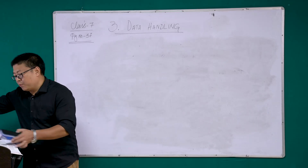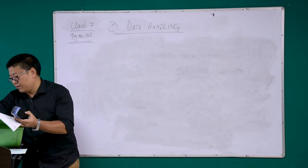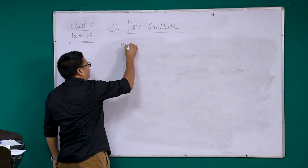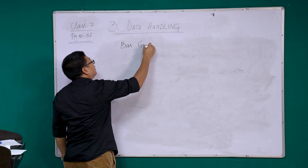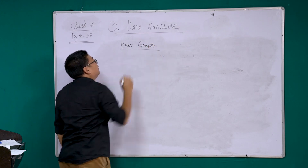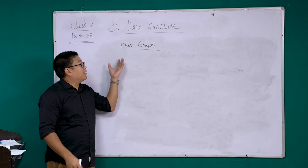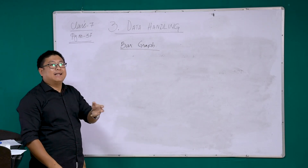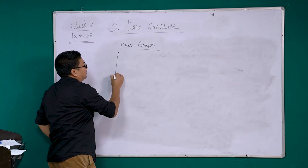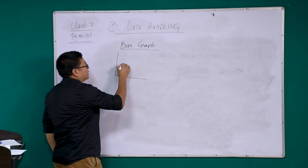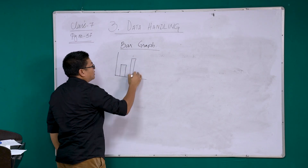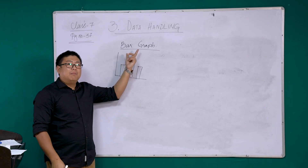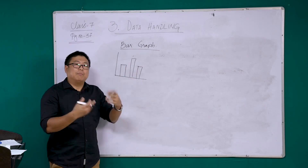The next topic we will be discussing is bar graph. A bar graph is simply a graph that is displayed using bars. This is a simple representation of a bar graph — it simply means a graph with bars.